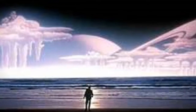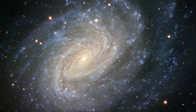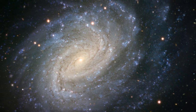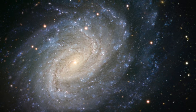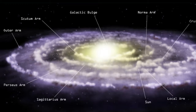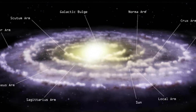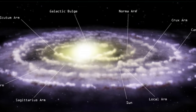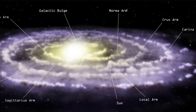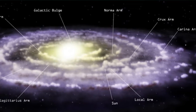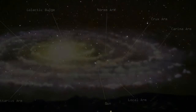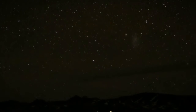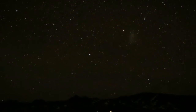Hello everyone and welcome back to Thoughts on the Cosmos. When we last left off we were exploring the structure of spiral galaxies by taking a look at the pieces and parts that make them up, like the central bulge, the main disk where most of the stars are located, and the mysterious and encompassing galactic halo.